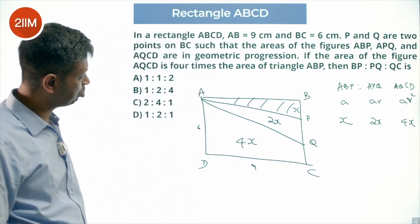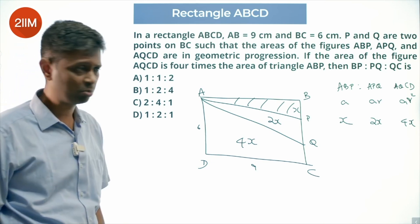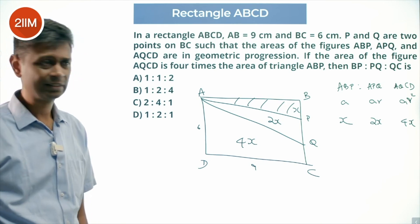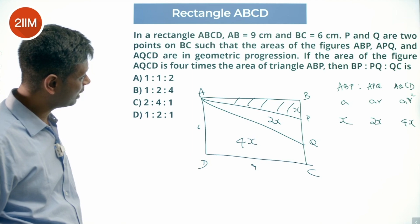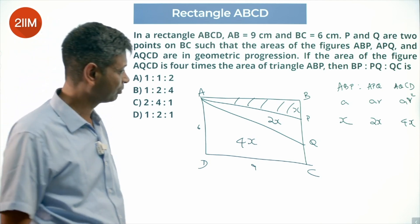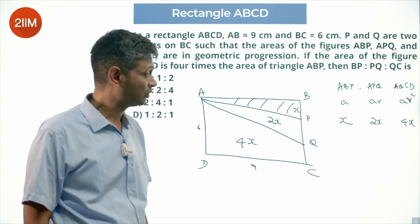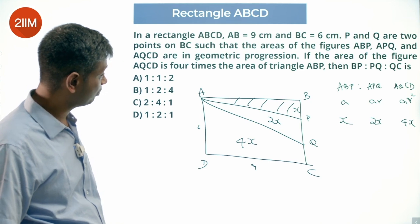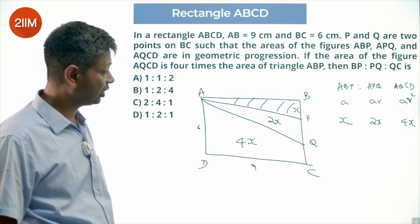Now we need to find BP:PQ:QC. The areas are in ratio X:2X:4X. We need to find the actual distances BP, PQ, and QC corresponding to these areas.